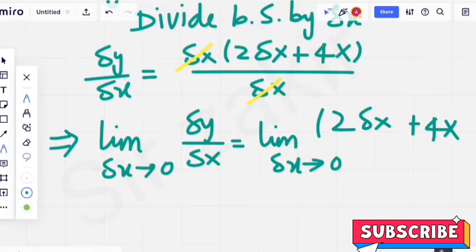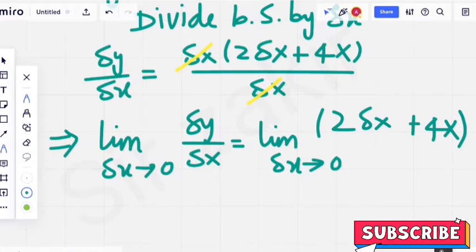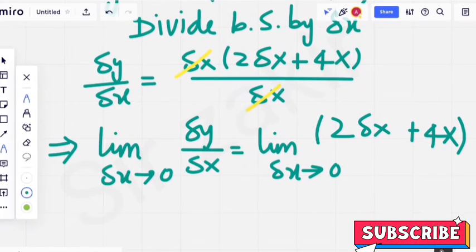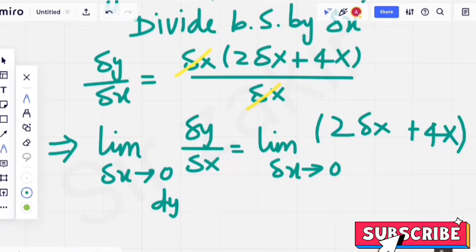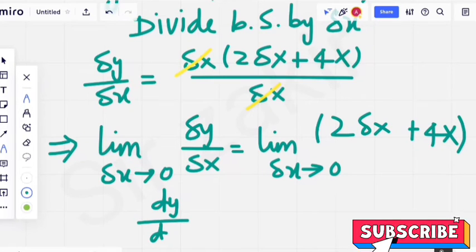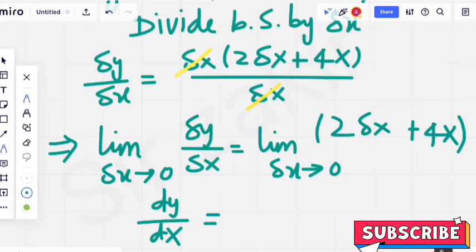As we know students, the above form with delta x, after division by delta x, it is known as average rate of change. And applying limit, it becomes instantaneous rate of change, which becomes derivative. Denoted by dy by dx. Derivative of y with respect to x.